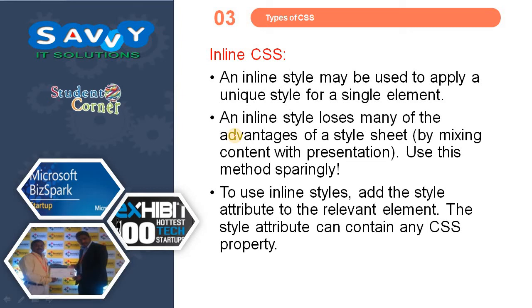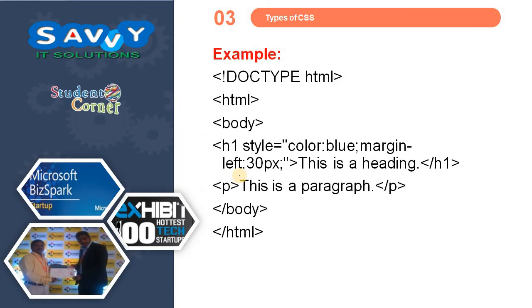Inline CSS: an inline style may be used to apply a unique style for a single element. However, an inline style loses many of the advantages of a style sheet by mixing content with presentation. To use inline styles, add the style attribute to the relevant element; the style attribute can contain any CSS property. For example, on an h1 tag we apply color as blue and margin-left as a set value — these two are applied and the output will reflect those changes. The paragraph tag, if not altered, will have default styles applied.